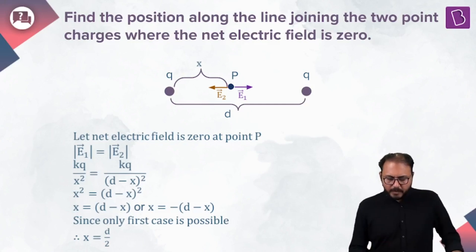Look at the math: KQ by X square equals KQ by (D minus X) whole square. If I solve the simple math, what do I get? I get X equals D by 2. Midpoint? Yes.